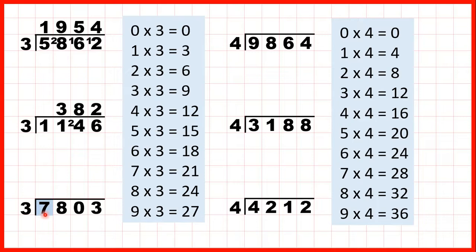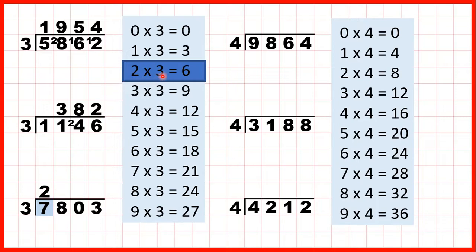Well if we take the first digit we have 7 divided by 3. We're looking for a number in the 3 times table which is as close to 7 as possible, but not more than 7. That's 6, and 2 times 3 is 6, so 2 goes in our answer line. But 2 times 3 is only 6, so we have a remainder of 1.